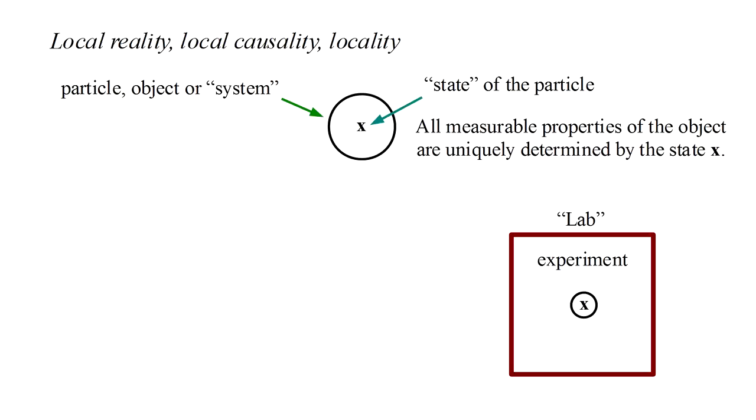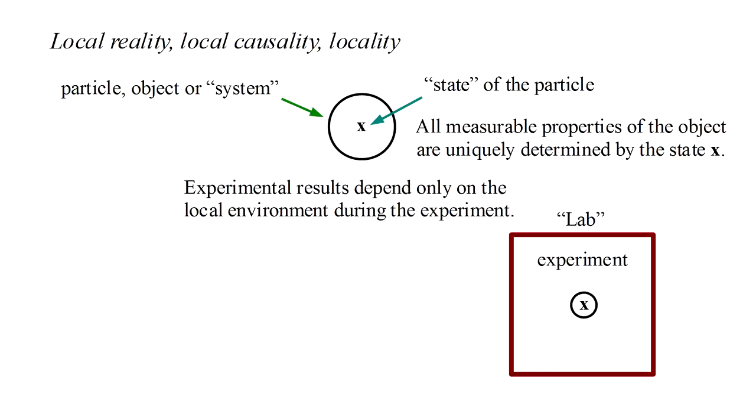We measure properties of the particle by performing experiments in a local environment we'll call our laboratory. The principle of locality assumes that in addition to the state of the particle, these experimental results depend only on the local environment in the laboratory during the experiment.